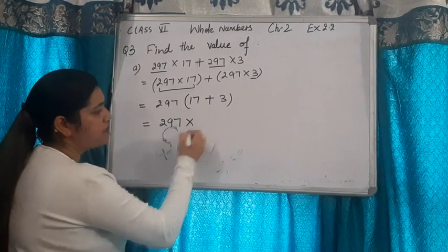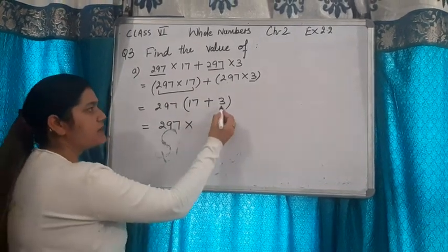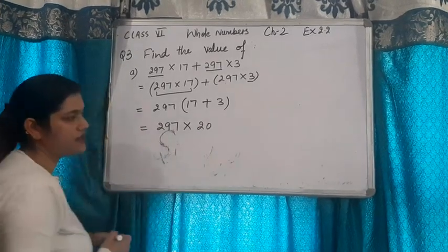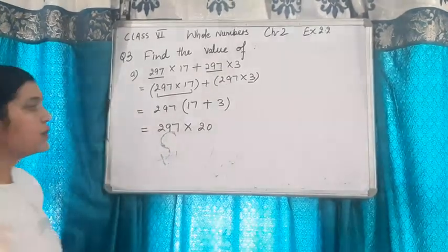297 bracket means multiply. When we add 17 and 3, you will get 20. 17 plus 3 is 20.